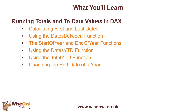We'll look at the DatesYTD function to get all the dates from the start of the year up to the end of the current interval, and then the TotalYTD function to do a similar thing but in a much easier syntax. At the end of the video, we'll have a quick look at how you can modify the end date of a year for the measures you create, using some of the other functions we've already used in the video. Plenty to do in this one — let's get started.